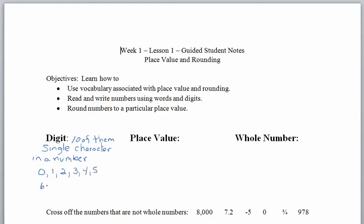Six, seven, eight, and nine. Of course, ten is not a digit. Ten is a two-digit number because it uses one and zero.